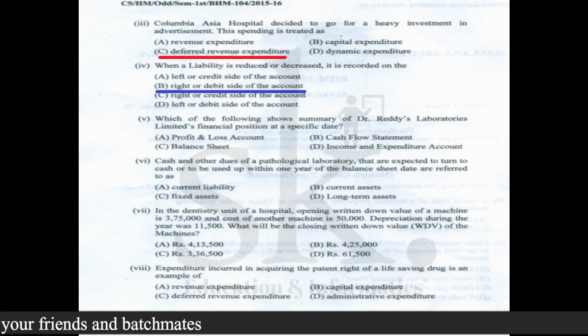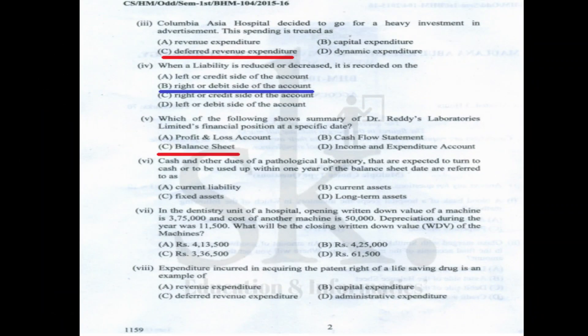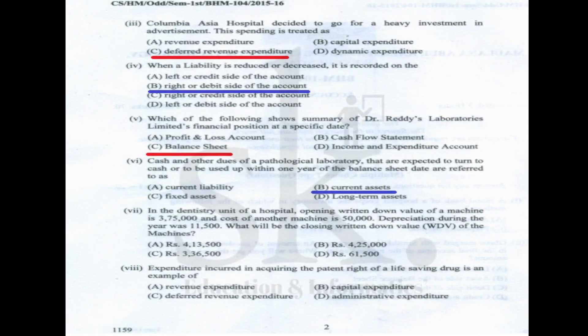Question number five: which of the following shows the financial position of Dr. Reddy's Laboratories Limited at a specific date — financial position is denoted by a balance sheet. The correct option is C. Question number six: cash and other dues of a pathological laboratory expected to convert to cash within one year or a balance sheet date are current assets. The correct option follows the definition of current assets.